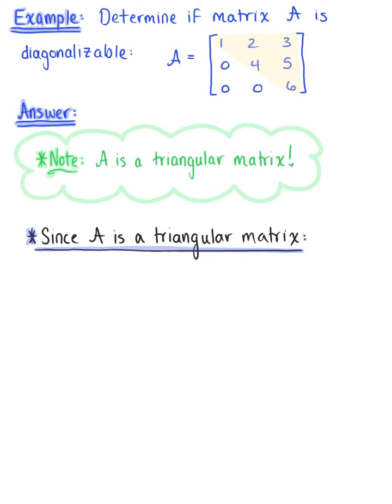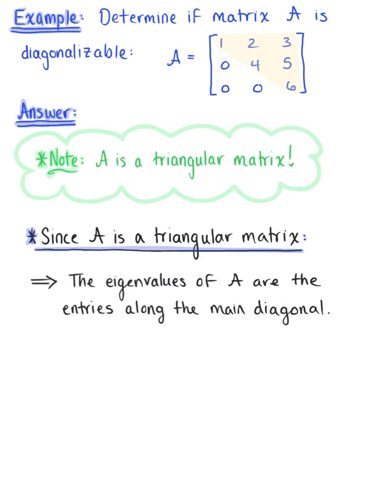Since matrix A is a triangular matrix, we can automatically conclude that the eigenvalues of matrix A are the entries along the main diagonal.